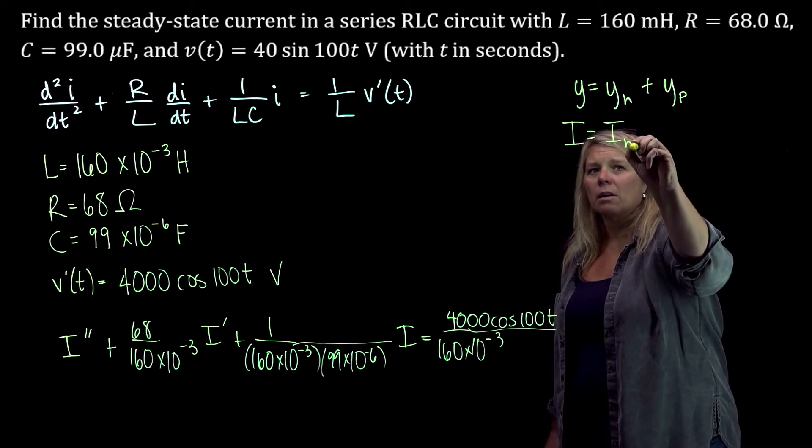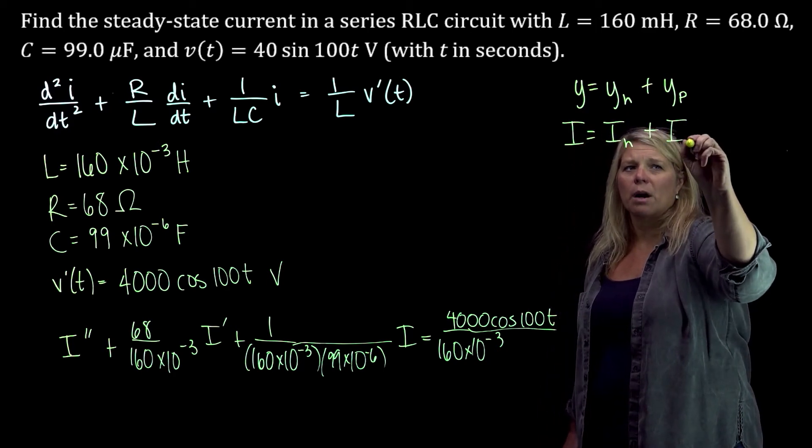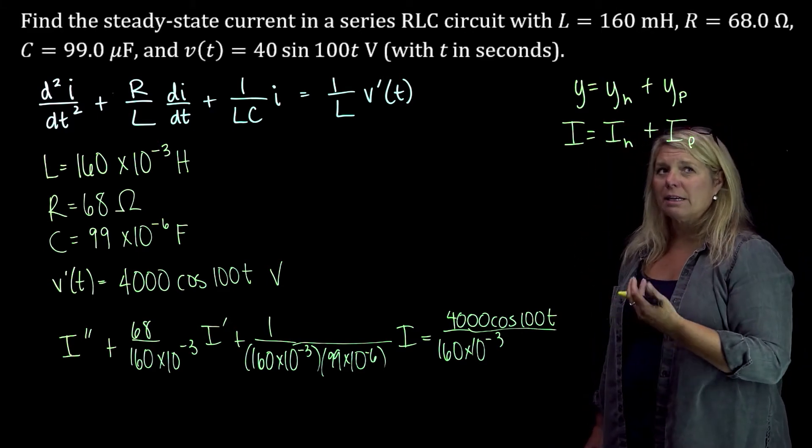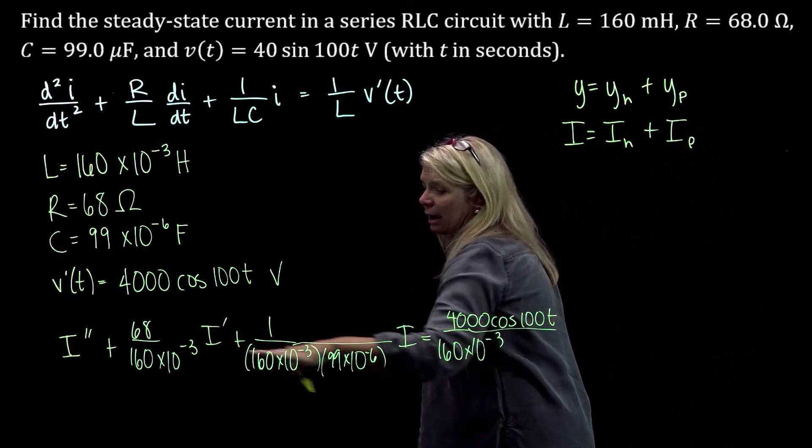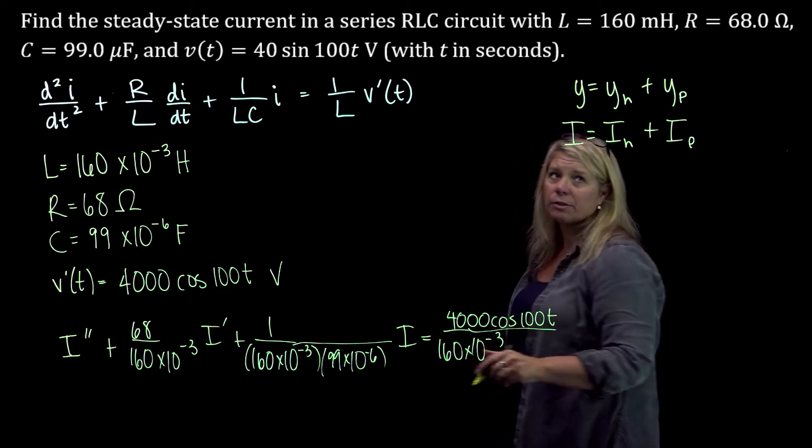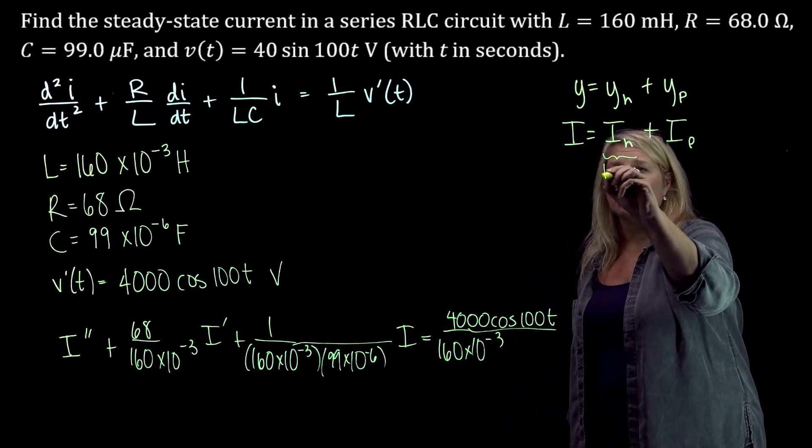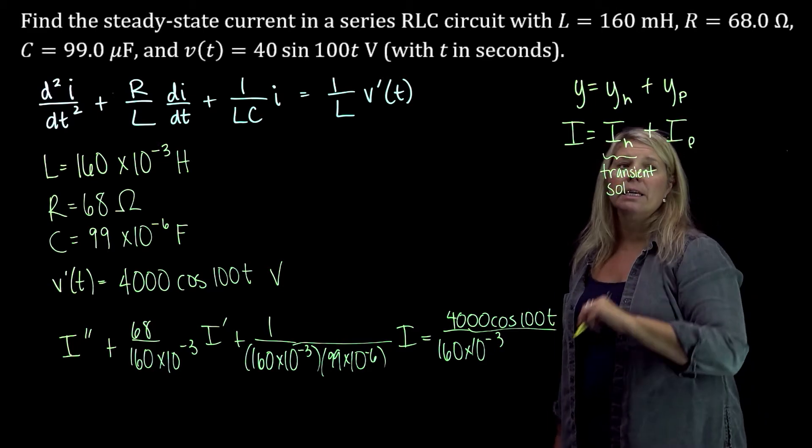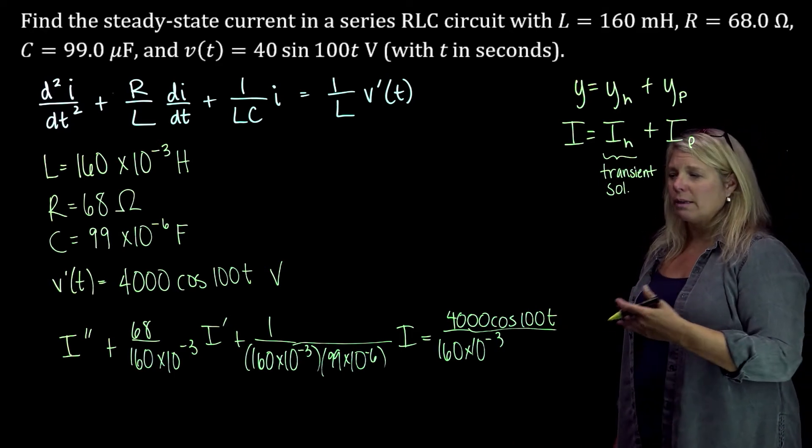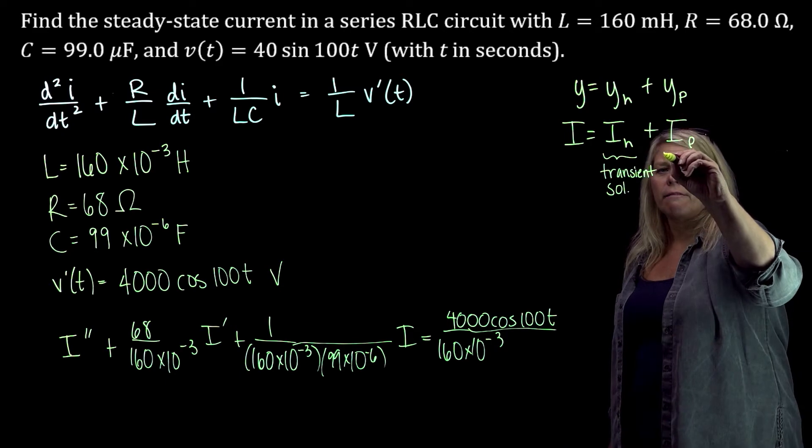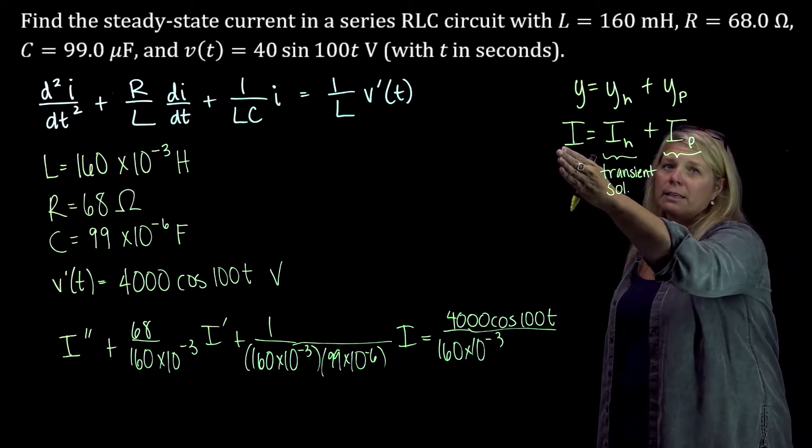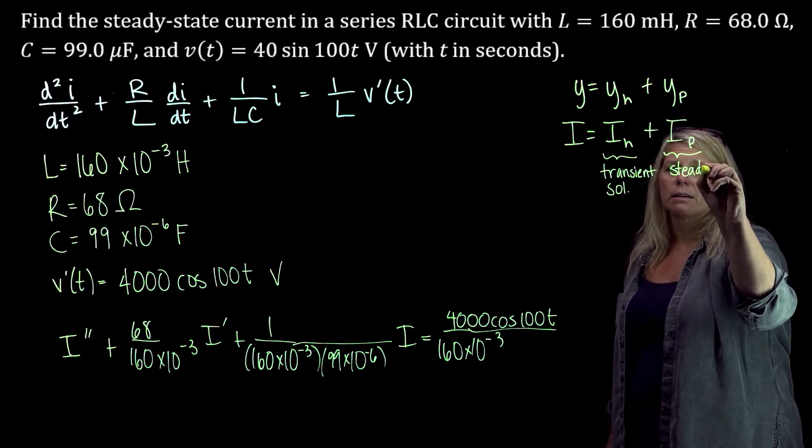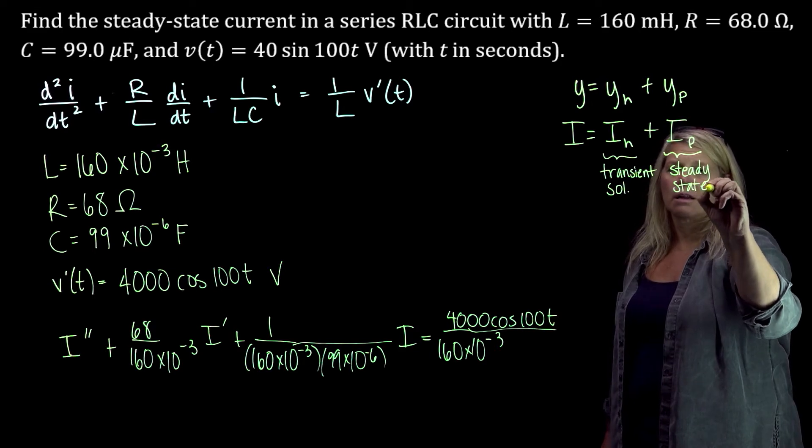And then we've got the homogeneous part and the particular part. In terms of the applications, the homogeneous part eventually is going to die out. We can actually go ahead and verify that by finding our zeros of the characteristic polynomial. This is going to be our transient solution, transient current. It's going to die out reasonably quickly, depending on what the constants actually turn out to be. And then eventually, the current is going to approach this part, that is the steady periodic or steady state solution.